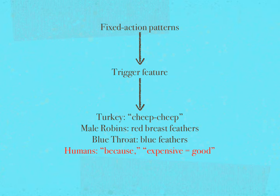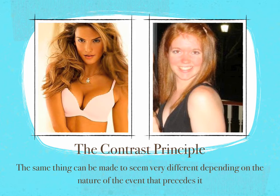We add expensive equals good to the list of trigger features for human compliance. The people buying the turquoise operated on the shortcut odds of expensive equals good. In the long run, we can't be expected to recognize and analyze all aspects of every situation — we need shortcuts. As influencers, exploiting these shortcuts ensures that we consistently get people to say yes.